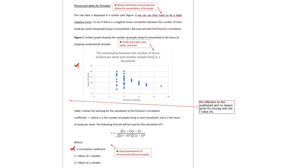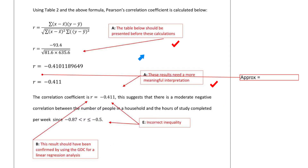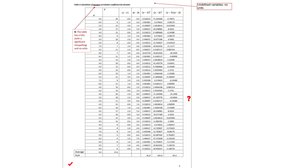Both markers noted good presentation of the formula with defined variables. The Pearson's product moment correlation coefficient formula and variables are nicely presented. The table below should be presented before these calculations. These results need a more meaningful interpretation, and the examiner agrees. The approximate equals sign is not used — just three significant figures with no 'approximately' written. This result should have been confirmed using the GDC for a linear regression analysis. There is also an incorrect inequality and wrong number. This table has a title with a significant misspelling, no units, and undefined variables.